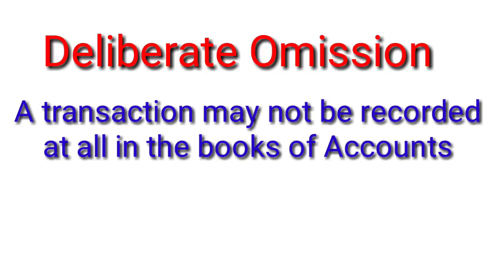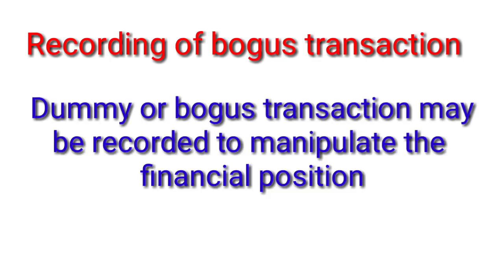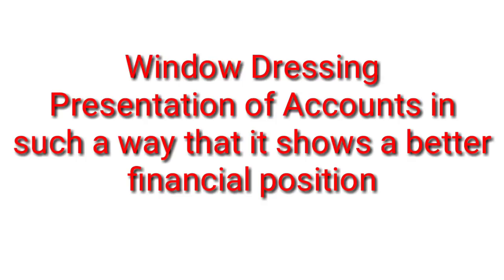The next type under manipulation is recording of bogus transactions. Bogus transactions means fake or dummy transactions that are recorded to manipulate the financial position. For example, management may record expenses that don't actually exist in order to reduce profits and thereby pay less tax to the government. Such fabricated entries are called bogus transactions.